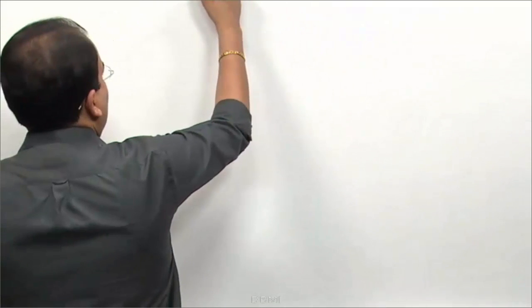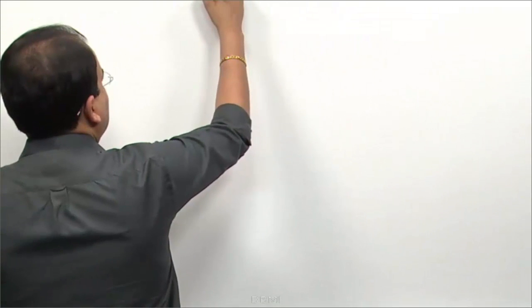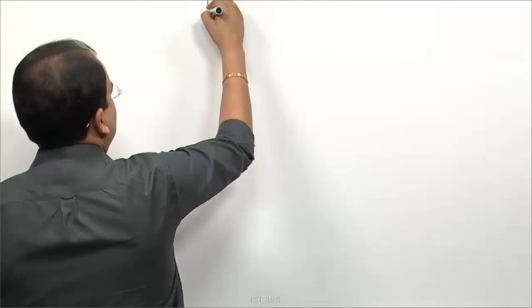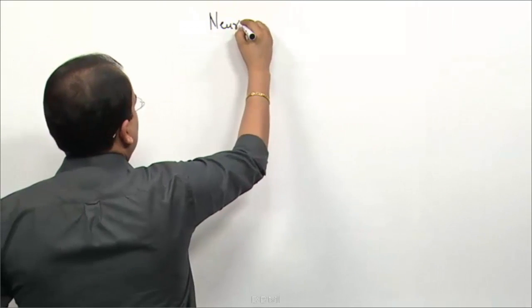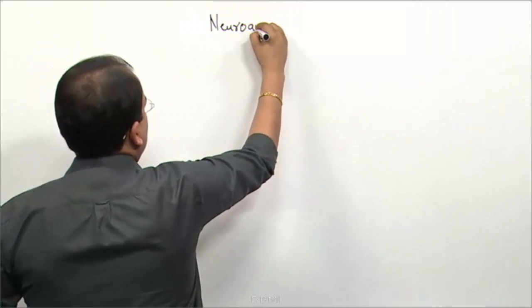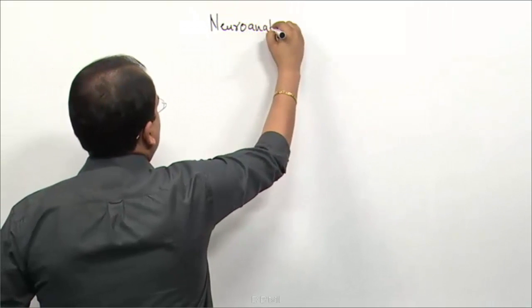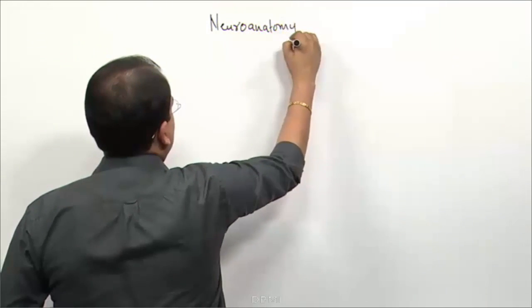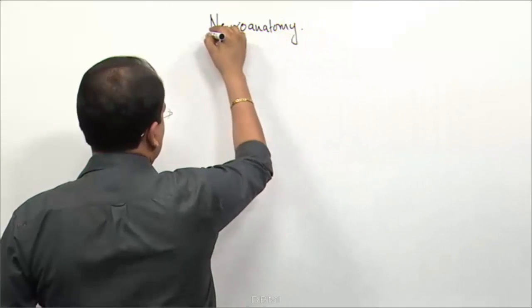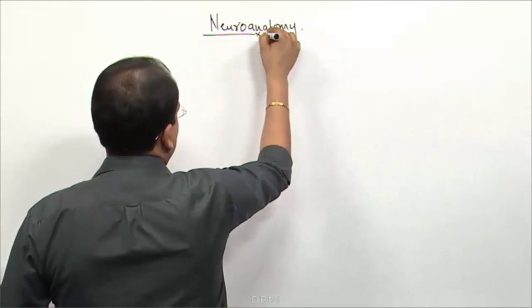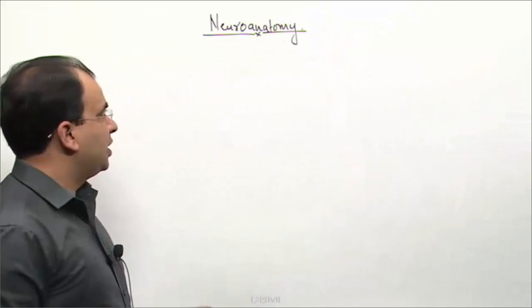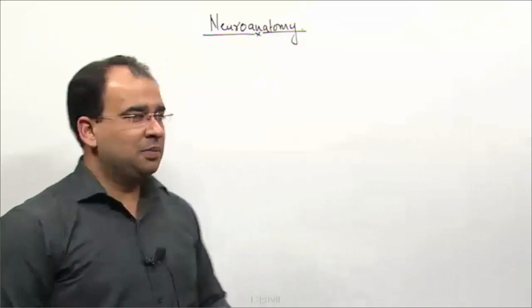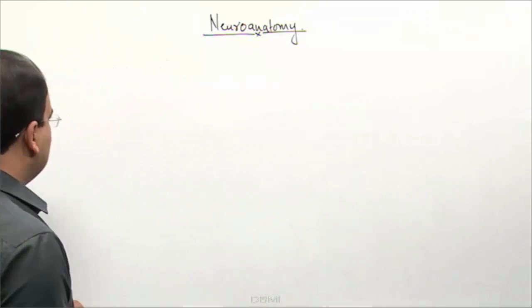In the neuroanatomy, we will start with the brain vesicles. Let us start neuroanatomy and we will start with the brain vesicles.